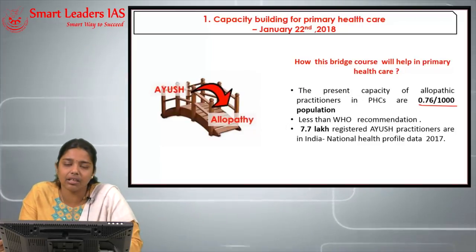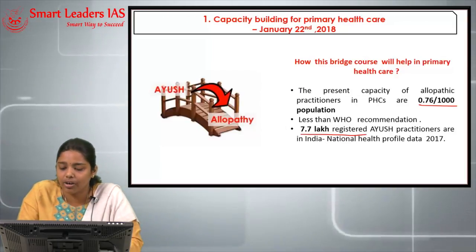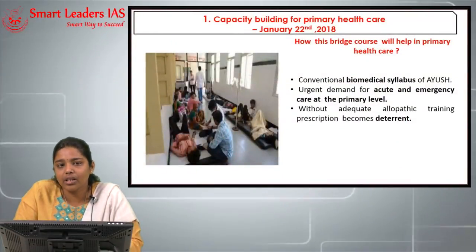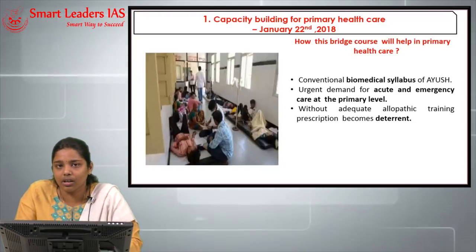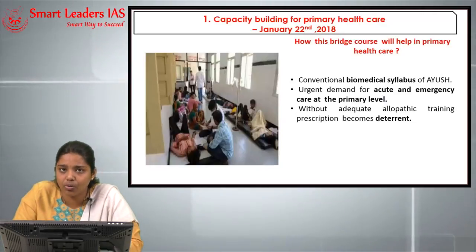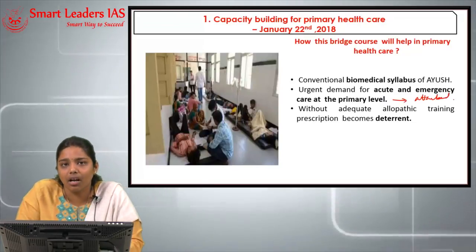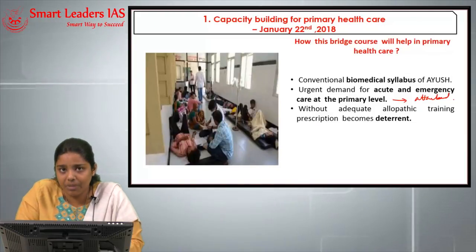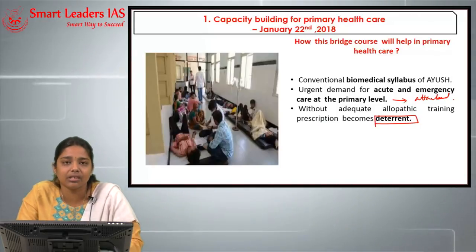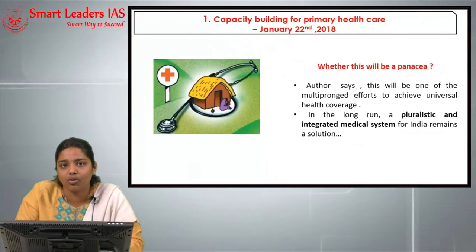We have a large supply of Ayush doctors — more than 7 lakh registered Ayush practitioners are available in India, according to National Health Profile data 2017. The conventional biomedical syllabus of Ayush makes it easy for Ayush doctors to upgrade to the level of MBBS doctors. There is an urgent demand for acute and emergency care at the primary level. However, allowing Ayush doctors to give modern medicine without any training can be a deterrent, as happened in cases in Chhattisgarh's tribal areas. Proper training must be given to Ayush doctors before they are allowed to prescribe modern medicines.